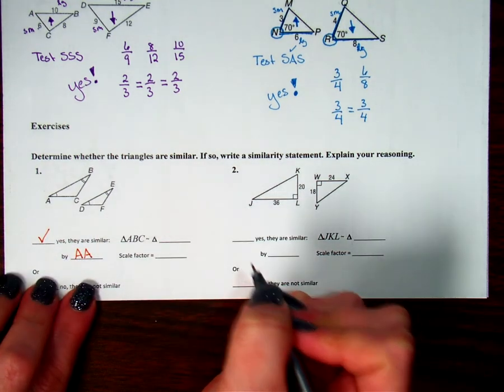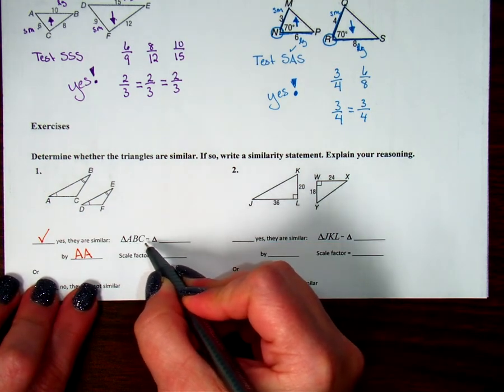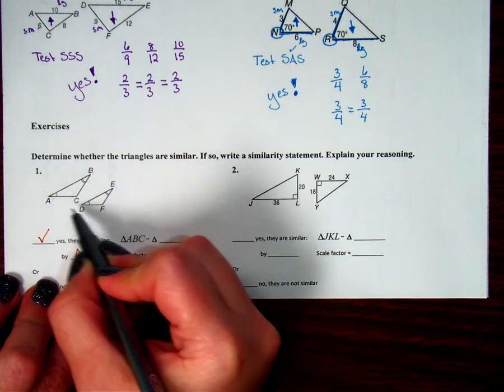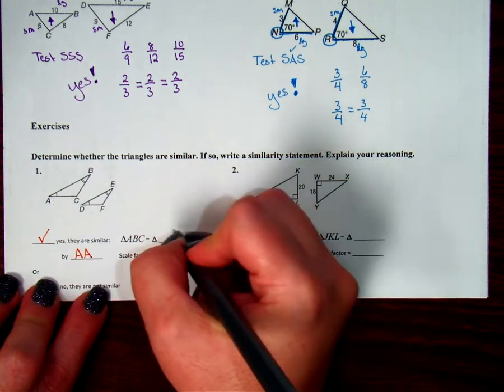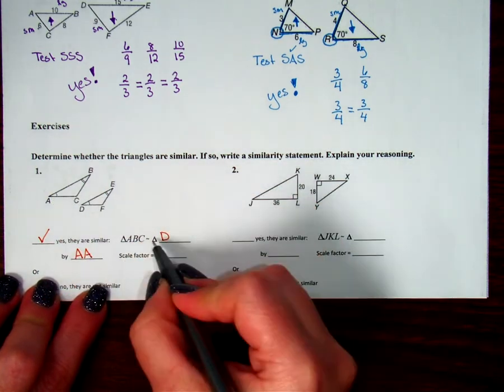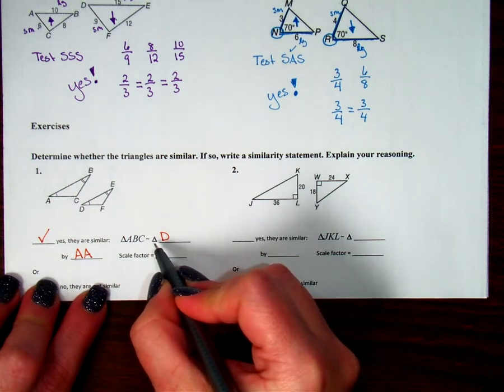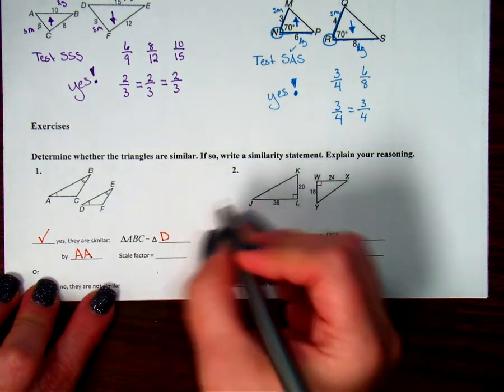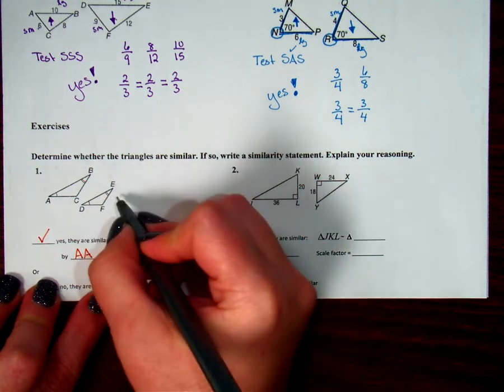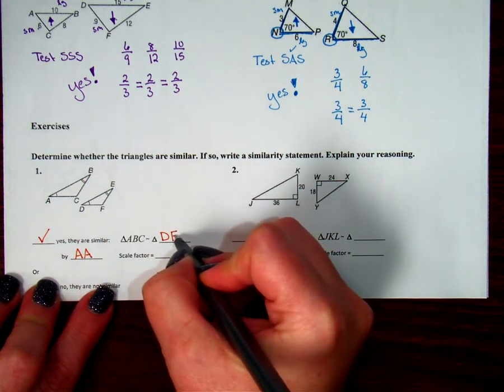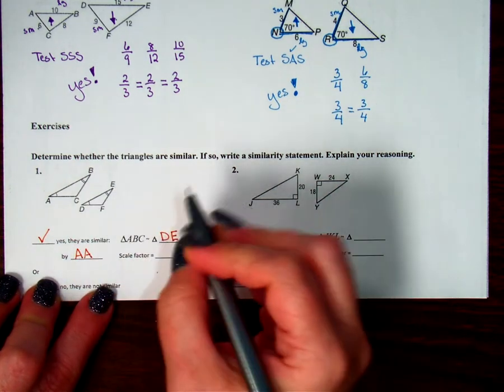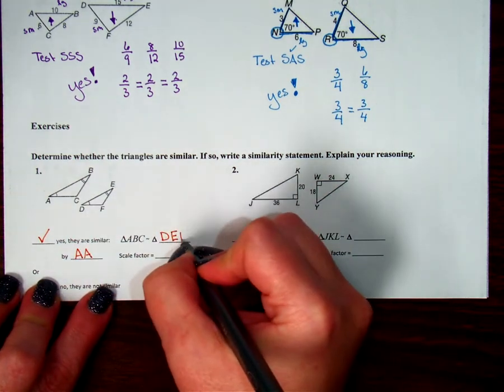Now I need to write my similarity statement. Triangle ABC is similar to triangle. If I start here at A, which has a single arc on it, then I have to start at D. And I already have the triangle symbol written there for me. And then from A, I go to B that has the double arcs. So B double arcs E. And then last but not least, I come to the unmarked angle C, which is going to match with F.